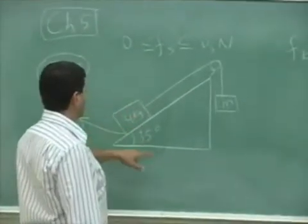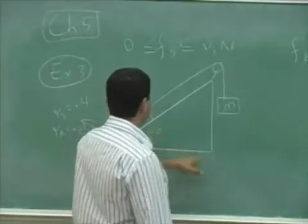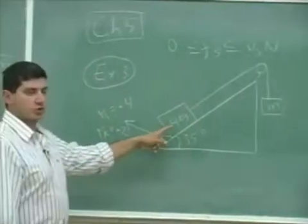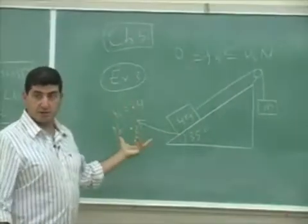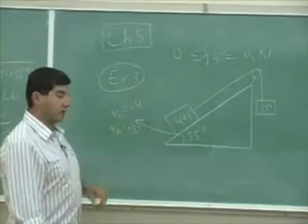Remember there was a four kilogram object. I put the exact same numbers here, 35 degrees, and we had an M. But this time I'm going to add friction to the problem, and we're going to analyze the incline plane. This time I'm going to have mu s is 0.4, mu k is 0.2.